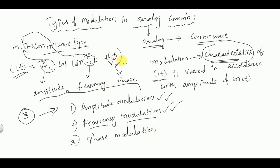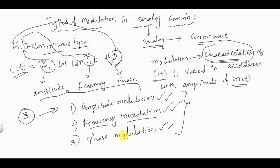The third type is Phase Modulation (PM): if the phase of the carrier is varied in accordance with the message signal, it is called phase modulation. In the upcoming classes, we will learn about each type of modulation, their demodulation techniques, and different characteristics. In the next class, we will start with amplitude modulation. If you are new to the channel, please consider subscribing. Thank you.